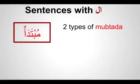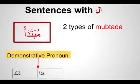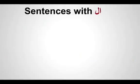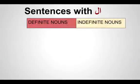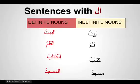Muptada comes at the beginning of the sentence most of the time. We've learned demonstrative pronouns — hadha and dhalika — and we know that proper nouns, names, places, animals, things, and adjectives when they come at the front of the sentence are a muptada. We learned in our previous session how to make an indefinite noun definite: a word ending with double damma is indefinite, and we make it definite by adding the definite article al- and changing the double damma to a single damma — al-baytu, al-qalamu, al-kitabu, al-masjidu.